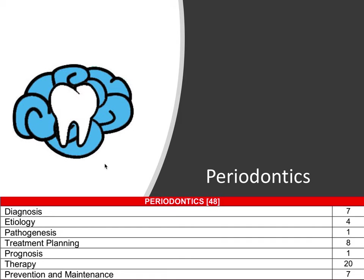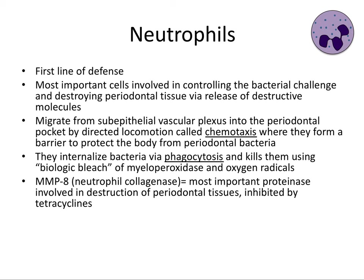As mentioned in the very first video, periodontal disease is an interplay between bacteria and the host. Plaque is the initiating factor, and the host responds — often damaging its own tissue in order to protect itself. It's important to talk about the immune cells that play a part in this response. The first cell we'll talk about is the neutrophil. Neutrophils are the first line of defense and are considered the most important cells involved in controlling this bacterial challenge and destroying periodontal tissue via release of destructive molecules.